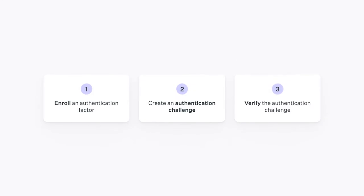The API currently enables you to add support for time-based one-time passwords and one-time passwords sent via SMS. To get started, you'll need a WorkOS account, an API key — which you can find in the WorkOS dashboard — and we highly recommend using one of our SDKs in your language of choice for a better developer experience. Integrating with the MFA API is done in three steps: you first enroll your user in an authentication factor, then you create an authentication challenge, and finally you verify that created challenge.